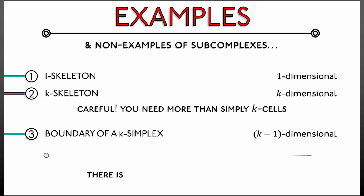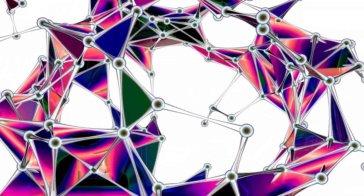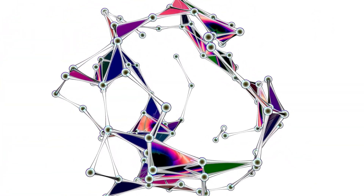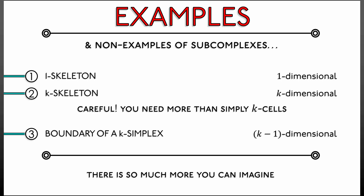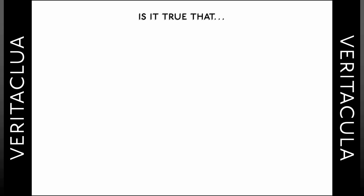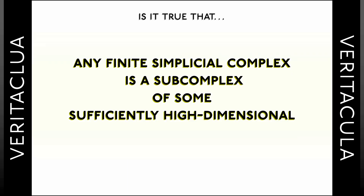These are just a few examples — there is much more you can imagine. Think of any simplicial complex and look at subsets that satisfy this property of containing all their faces; that gives you a potentially interesting subcomplex. Here is a little fact: any finite simplicial complex, no matter how big or complicated, can be realized as a subcomplex of some sufficiently high-dimensional simplex. Just one simplex — as long as the dimension is high enough, there's room to pack in any given finite simplicial complex.